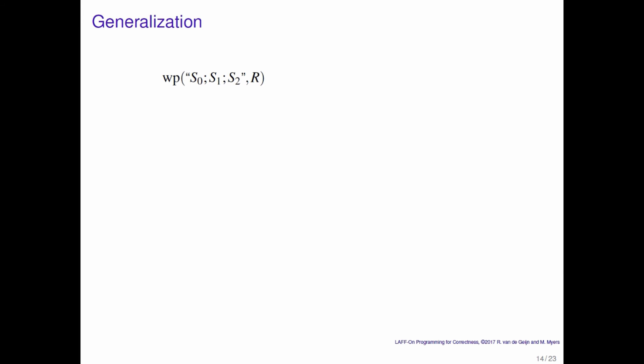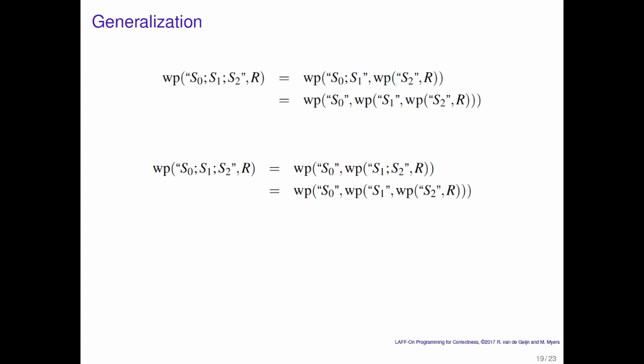Now we can obviously generalize this. We can compose three commands. And what that means is that the first two commands must leave you in a state where the weakest precondition for the third command holds. And then you can peel that off and you find that it's the weakest precondition of S0 leaving you in a state where the weakest precondition of S1 leaving you in a state where R is true. Or you can peel it in the opposite direction. And obviously you can generalize this to the composition of N commands.